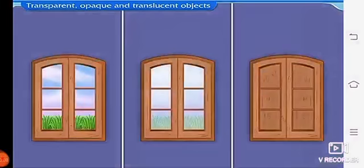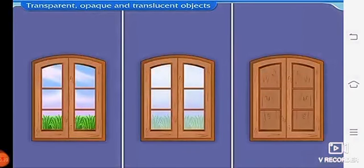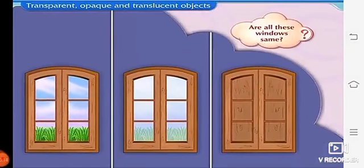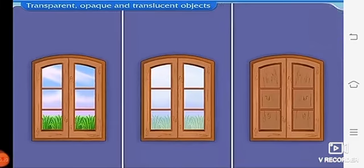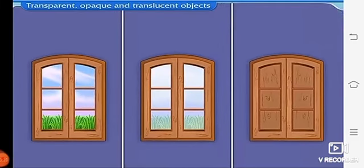So now, let us study about the concept that is transparent, opaque and translucent objects. So here, we are able to see three different types of windows. Let us look through the windows. Are all these windows same? No, all the windows are not same. So, we will observe from each of the windows.